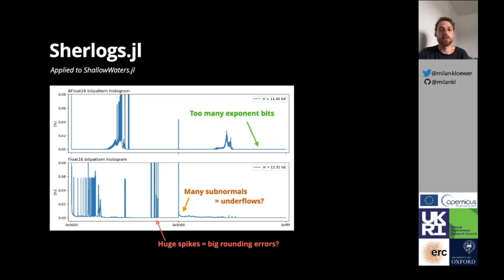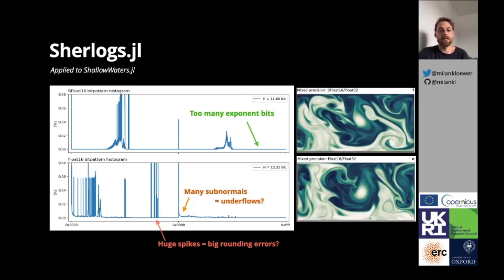BFloat16 have likely too many exponent bits, which ideally could be traded in for significant bits instead. With Float16, we observe a large number of subnormals occurring in the simulations, likely suggesting that there is quite some underflow at play. Entropy suggests that Float16 is slightly better suited in this application than BFloat16, which is indeed the case if you look at other analyses. Both formats yield satisfying results, though, as you can see on the right.